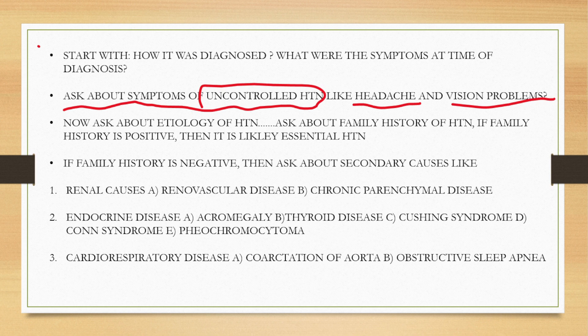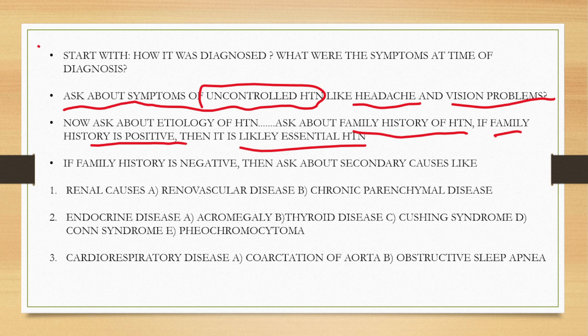Once we have done the brief history about hypertension, we will look for the etiology of hypertension. We will ask about family history of hypertension. If family history is positive, it is likely essential hypertension. If family history is negative and the patient is less than 40 years of age, then we will look for the secondary causes of hypertension, which are divided into three categories.